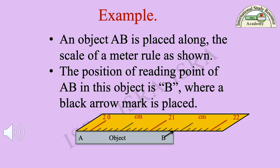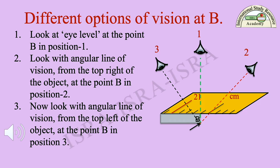Example: An object AB is placed along the scale of a meter rule as shown. The reading point of AB is at B, where a black arrow mark is placed. Look at eye level at point B in position 1, as shown with a green dotted line. Look with angular line of vision from the top right at point B in position 2, as shown with a red dotted line. Look with angular line of vision from the top left at point B in position 3, as shown with a black dotted line.